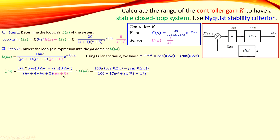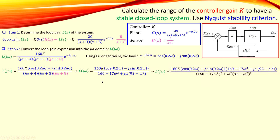The numerator remains as before, but the denominator is now an expression with a real part and an imaginary part. To obtain a real denominator, we multiply both numerator and denominator by the complex conjugate of the denominator. This is explicitly shown — this is the complex conjugate of the denominator. When you do that, you get the square of the real part plus the square of the imaginary part, and the j operator drops out, yielding a real denominator.